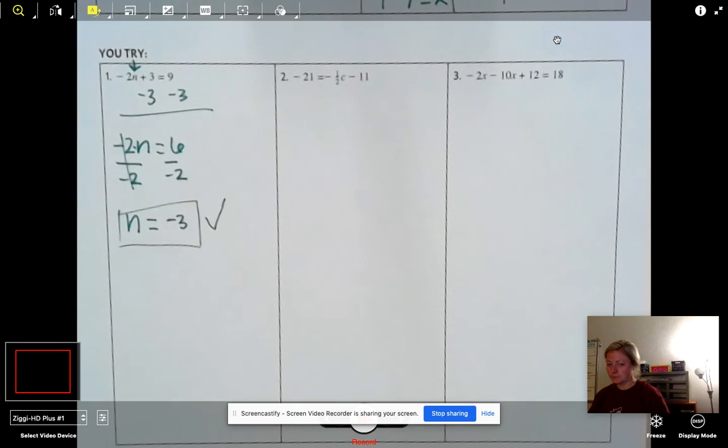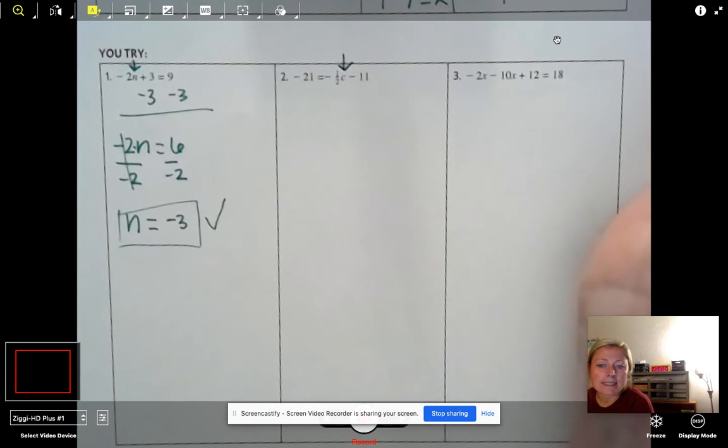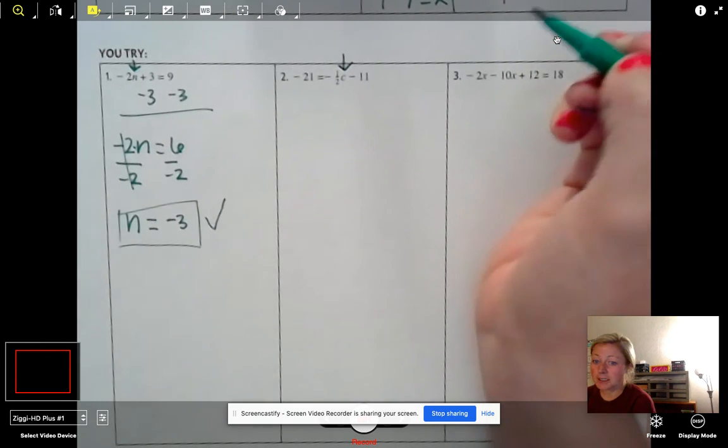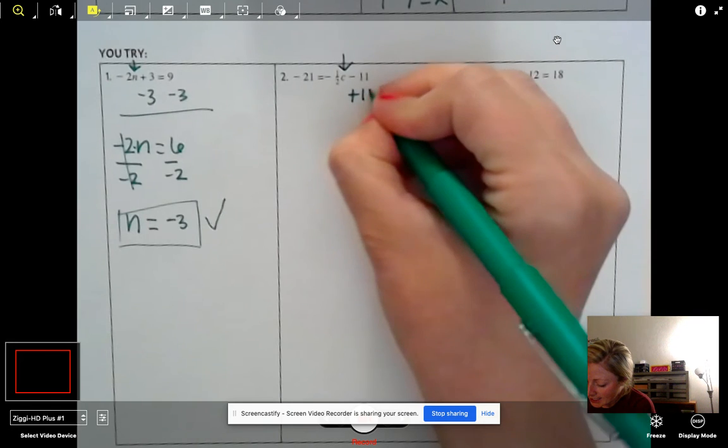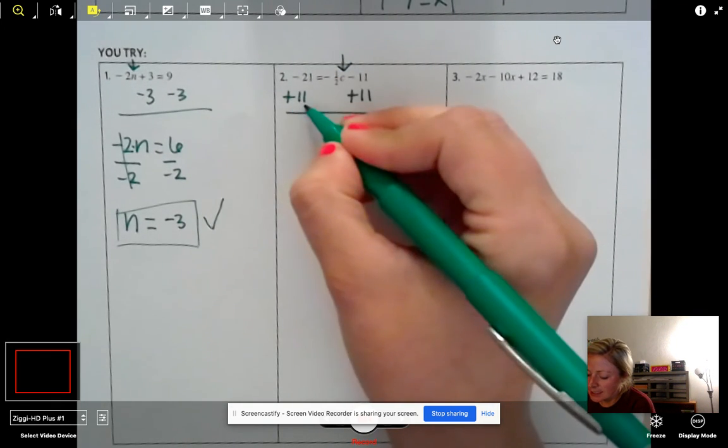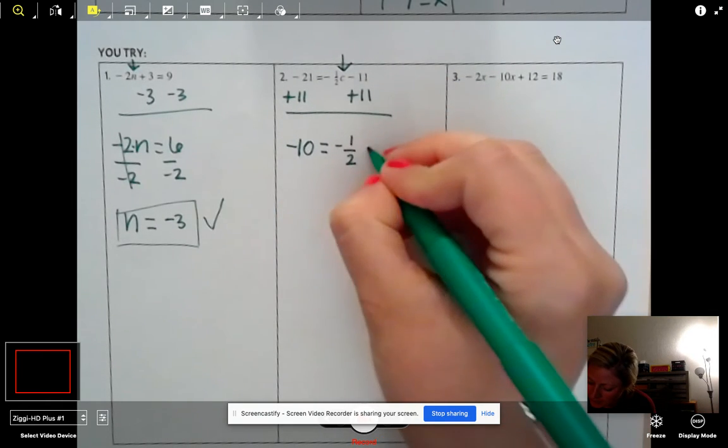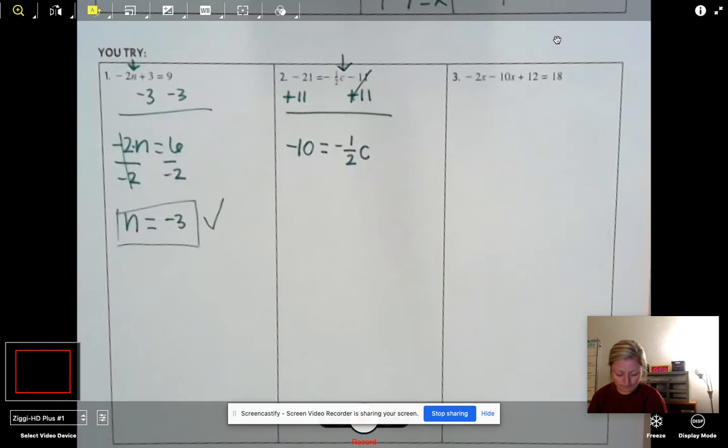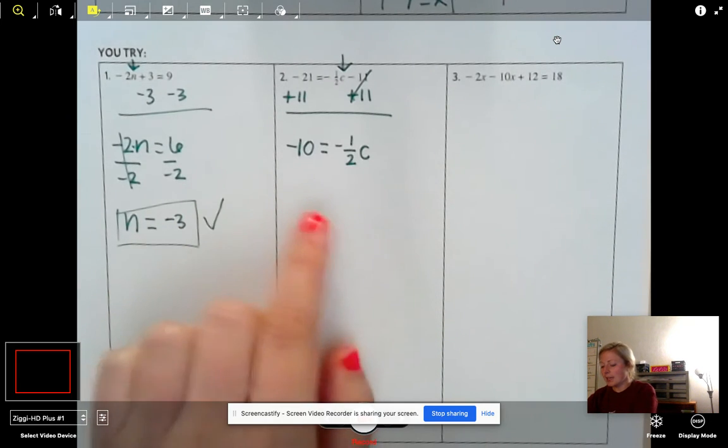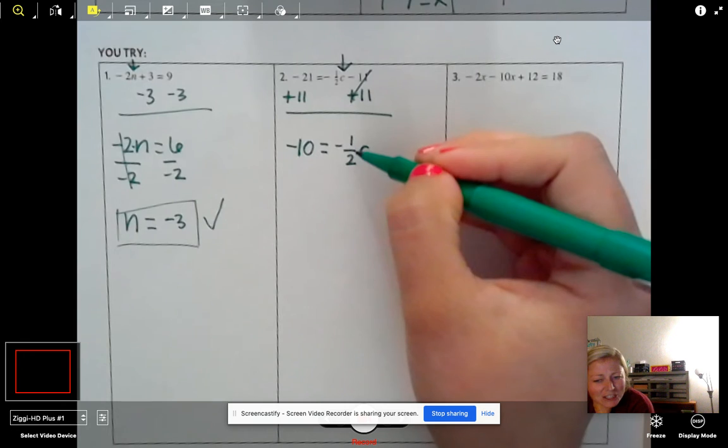Okay. Number two. Let's see here. So our goal, remember, is to get the variable alone. So that is C in this case here. We first have to move at minus 11. So what's the opposite of minus 11? Well, we're going to add 11. So negative 21 plus 11 gets us to negative 10. Drop down your negative one over two C. And then these 11s cancel. Okay. Now we're kind of at that weird thing again that I think we had last time in our notes. I have this weird fraction. I don't know how to deal with it. What do we do?